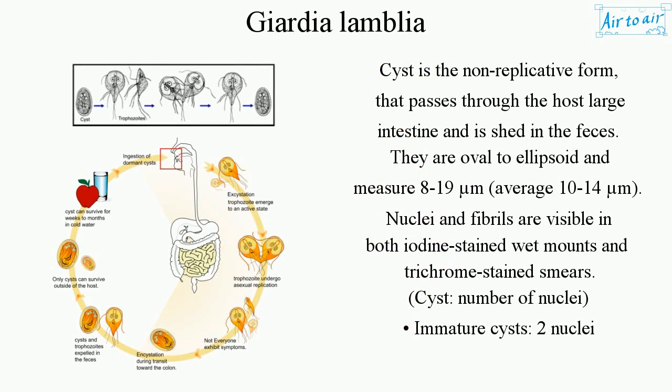The cyst is the non-replicative form that passes through the host large intestine and is shed in the feces. Cysts are oval to ellipsoid and measure 8 to 19 micrometers, with an average of 10 to 14 micrometers.